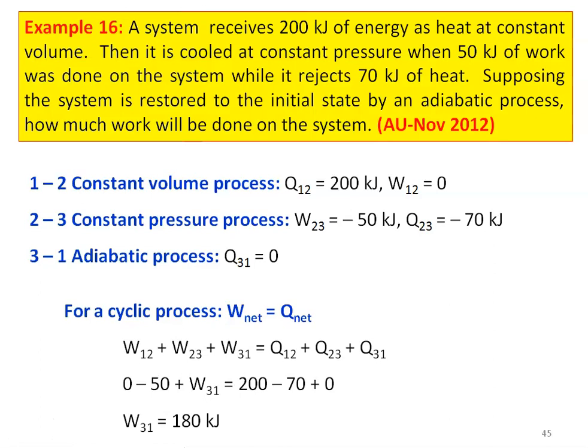Solving for W3-1, work done during the adiabatic process is 180 kilojoules. Work is done by the gas: 180 kilojoules during the adiabatic process.